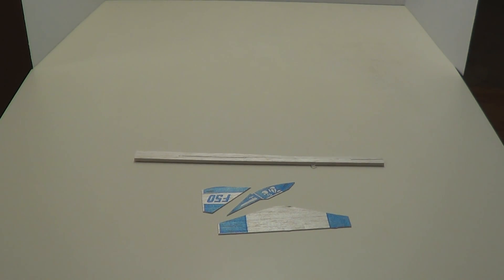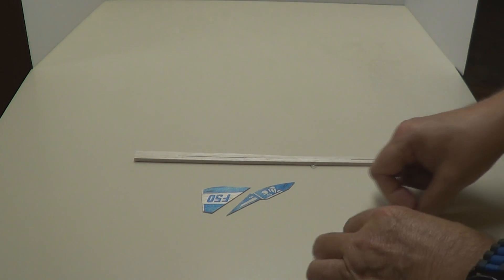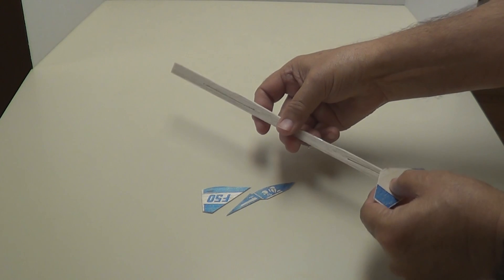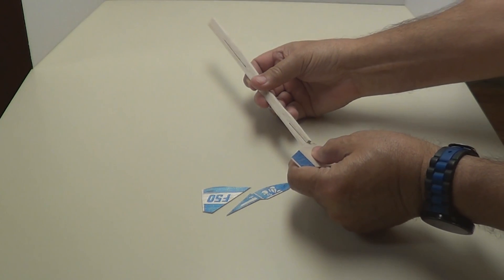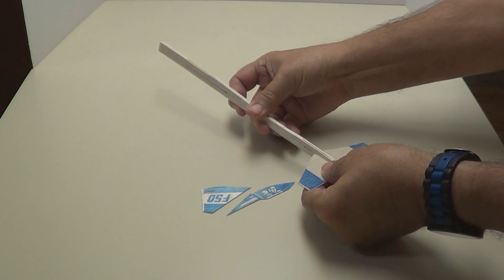Okay, we're ready to start putting the plane together. Here's all the pieces we punched out. Here's the elevator, it slides into the slot in the back of the fuselage just like this. Sometimes it's a little tight but it'll go in.